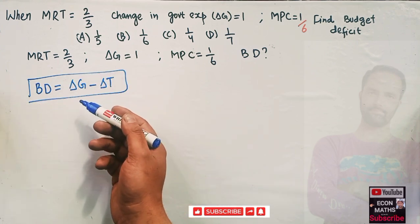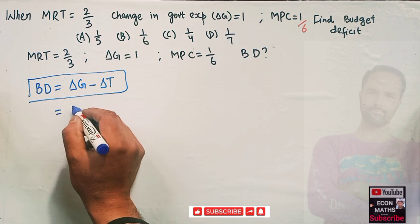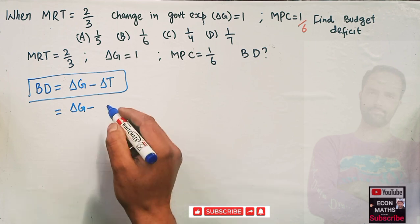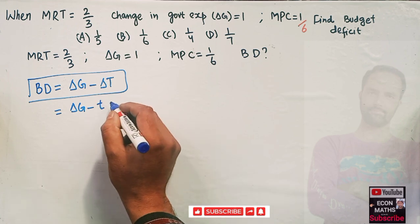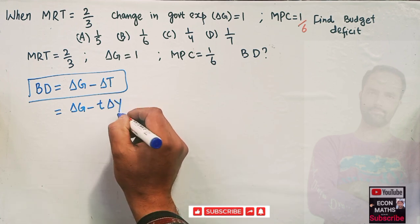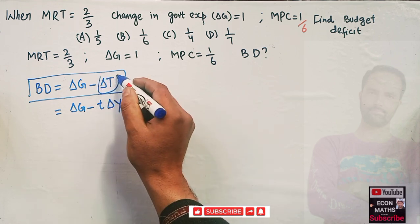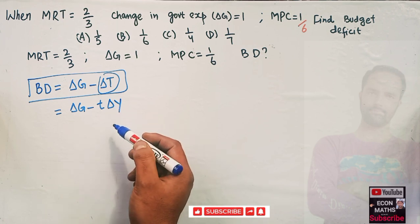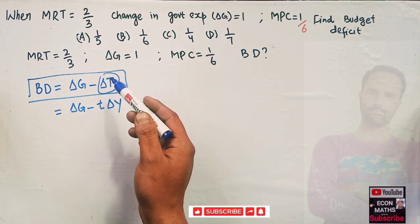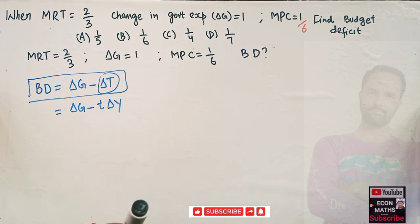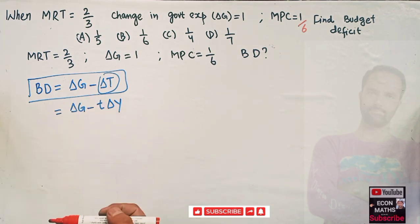We can also write this as ΔG minus (t × ΔY), because change in tax revenue equals the tax rate times change in income. So in place of ΔT we can write t·ΔY. Change in tax revenue equals the tax rate times change in income.